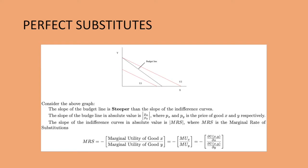Our first special case of consumer preferences is perfect substitutes. Looking at the graph, the slope of the budget line is steeper than the slope of the indifference curves — that's the first thing you should notice. The slope of the budget line in absolute value is the price of good X divided by the price of good Y. Because they are perfect substitutes, the slope is going to be constant, meaning the indifference curve is linear. The slope of the indifference curve in absolute value is your MRS, which equals negative marginal utility of X divided by marginal utility of Y.